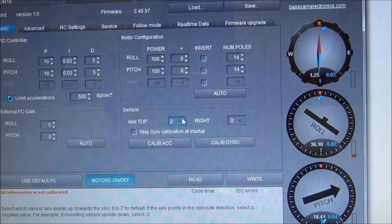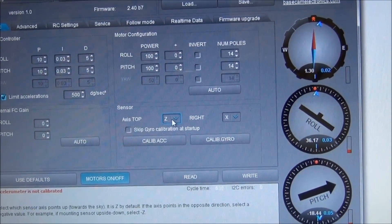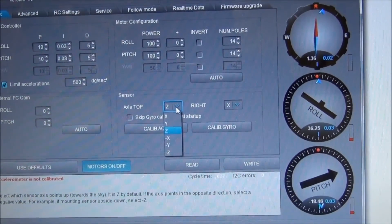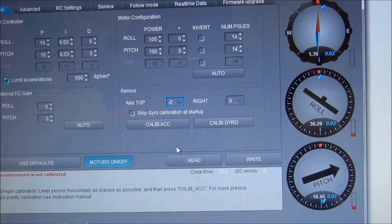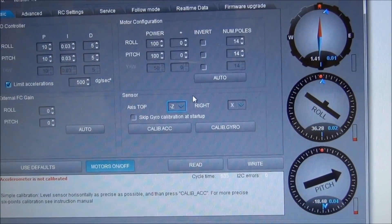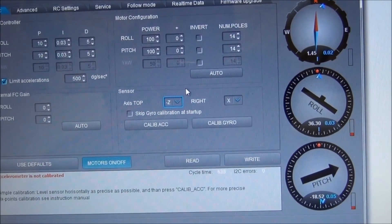The next box we'll go down to is this sensor box right here. We're going to change this axis top from Z to minus Z. And what that'll do is that'll hold the camera upright. So now instead of being upside down, it's actually going to be upright.